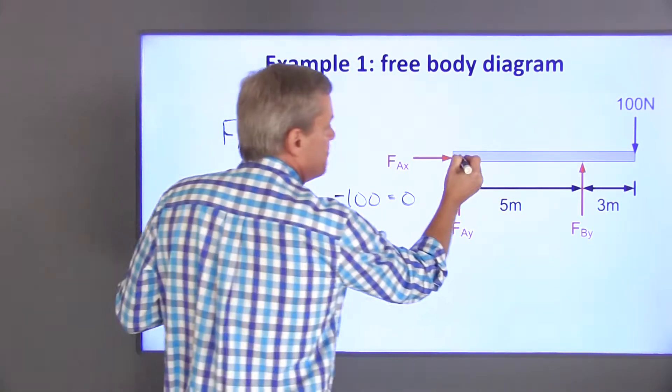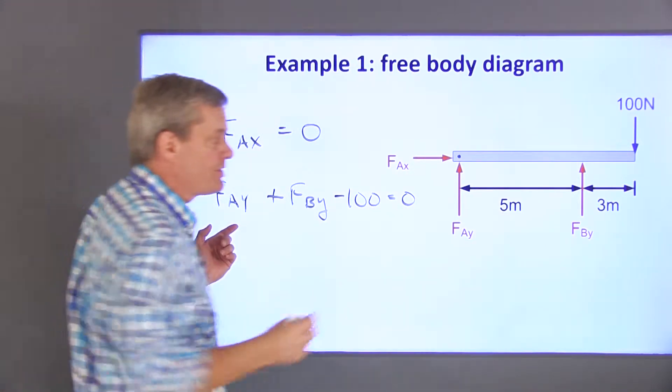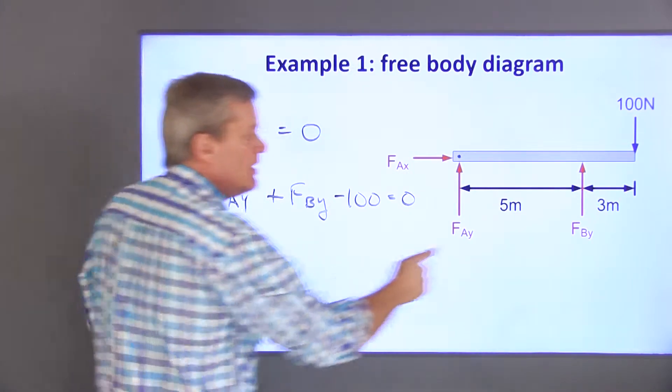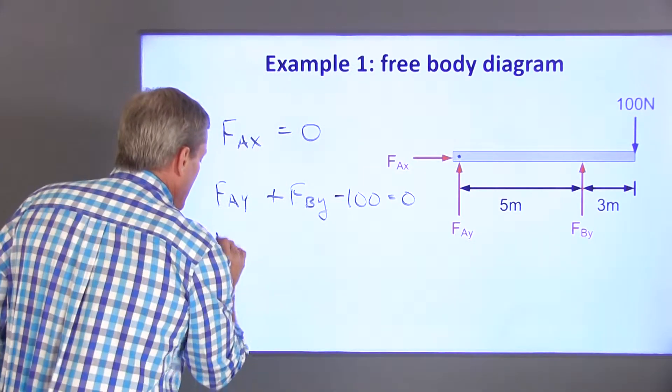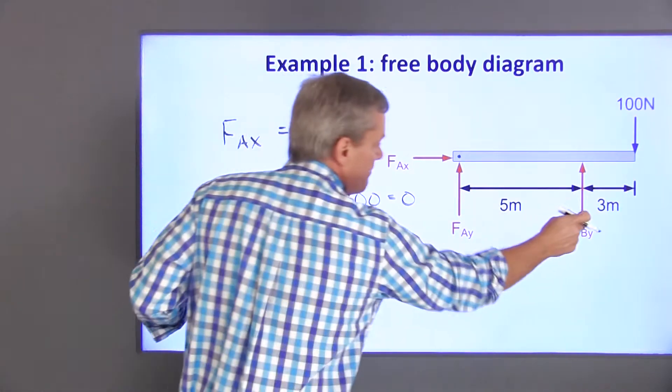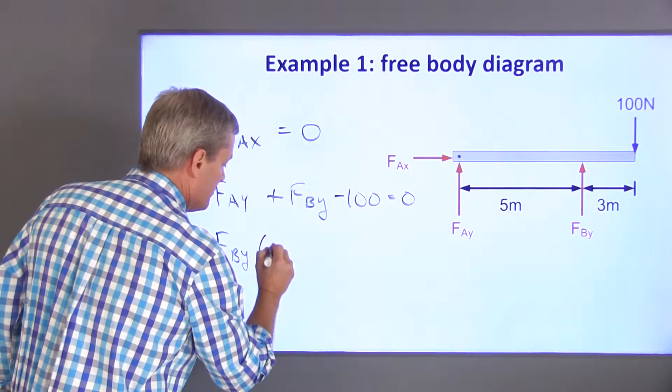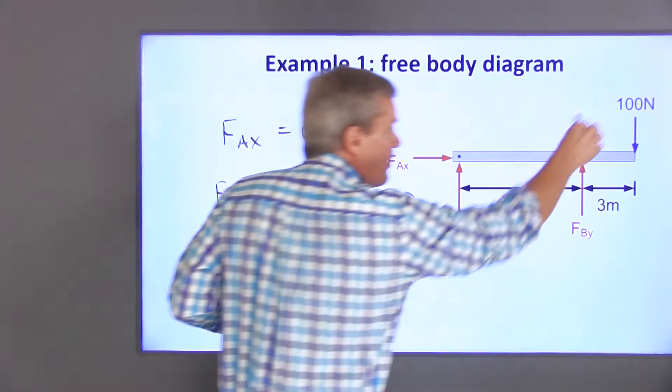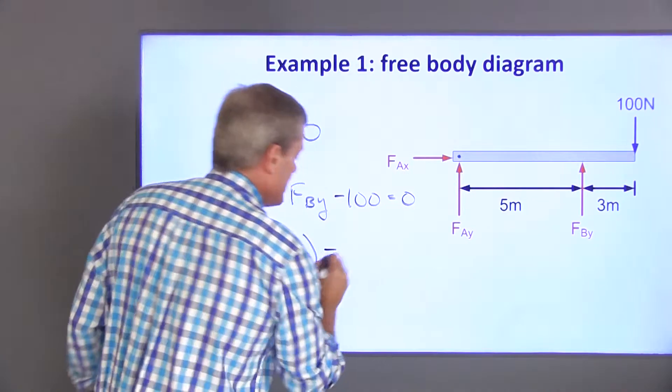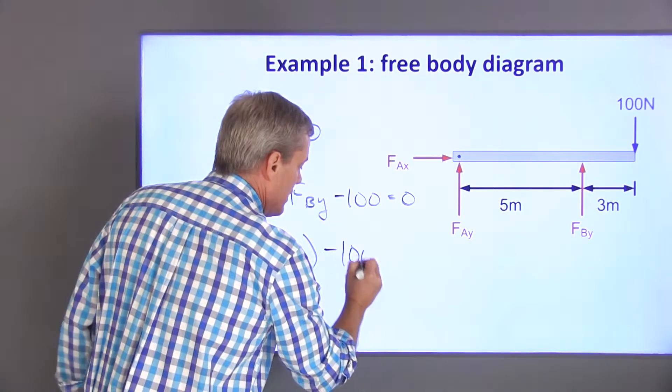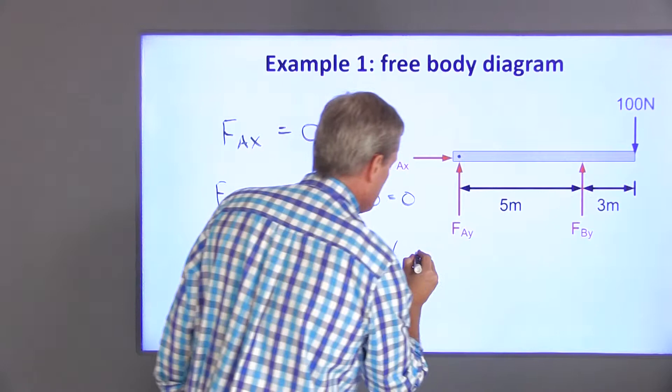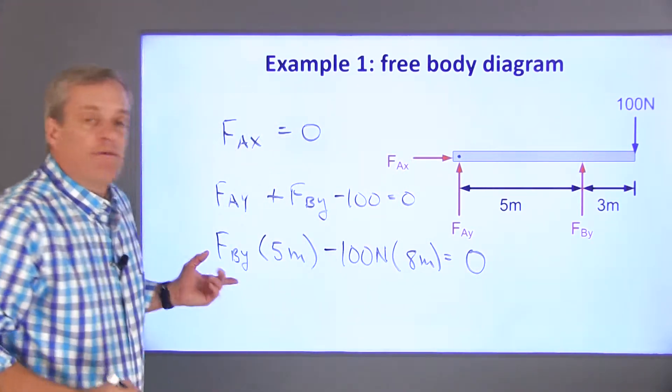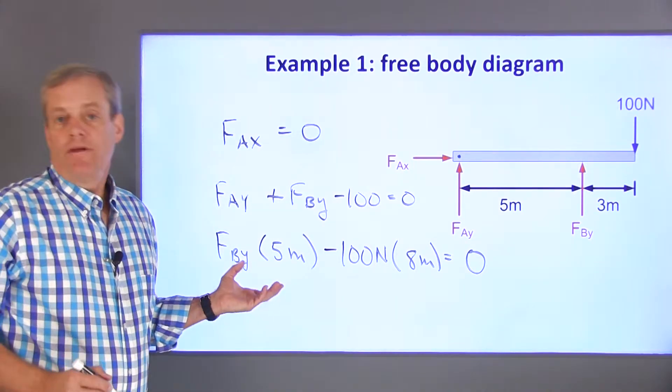Now I'm going to sum moments around this point. Moments are a force times a moment arm. The contributions from these two forces are zero. This FBY provides a moment, which is FBY times its moment arm, which is five meters. I'll claim that that's a positive contribution. The 100 newton force causes a moment in the opposite direction, so that's negative. 100 newtons times its moment arm, which is eight meters, sums to zero. Now I've got the equations. Next I'll put them in matrix form and solve them.